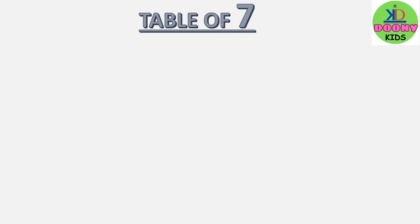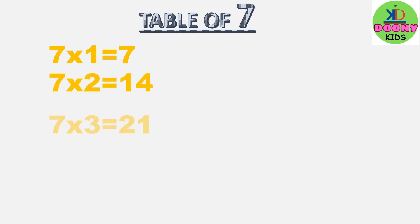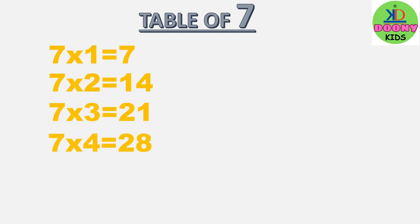Table of 7. 7 ones are 7, 7 twos are 14, 7 threes are 21, 7 fours are 28, 7 fives are 35.